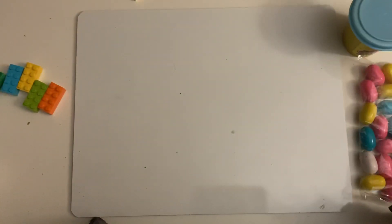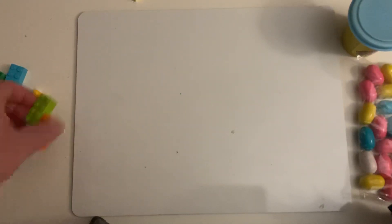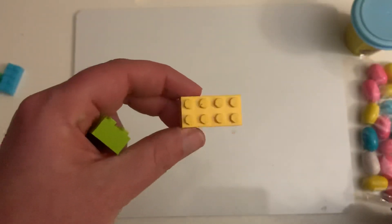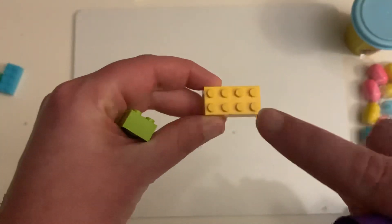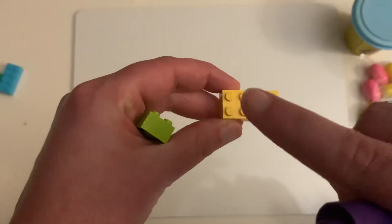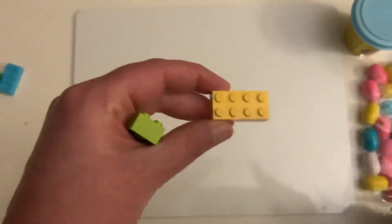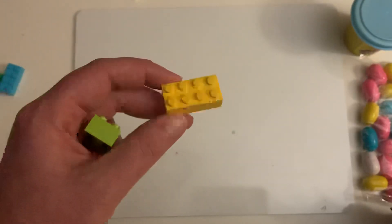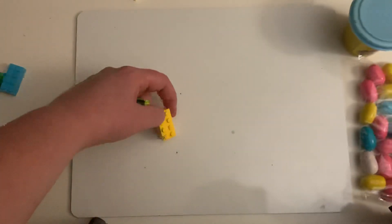So let's try using something around the house. And what I have around my house is Legos. So each of my Legos that I have has one, two, three, four, five, six, seven, eight circles. So this Lego represents one group of eight.